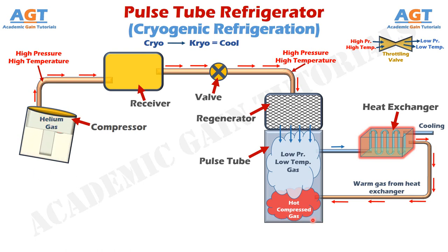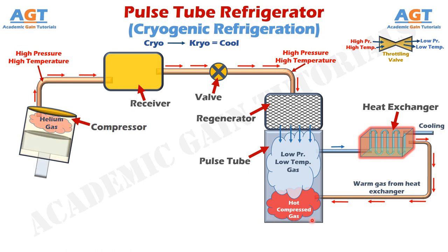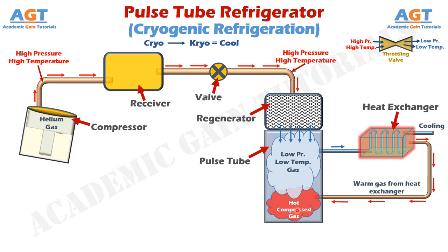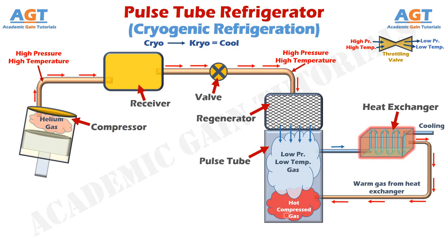Since this is a closed end, the gas will not go out of here, and will get compressed here due to force from the gas from the upper layer. And when the gas is getting compressed here, it again becomes hot due to the high increase in pressure — both pressure and temperature increase here just like the compressor chamber. So we have hot gas over here.